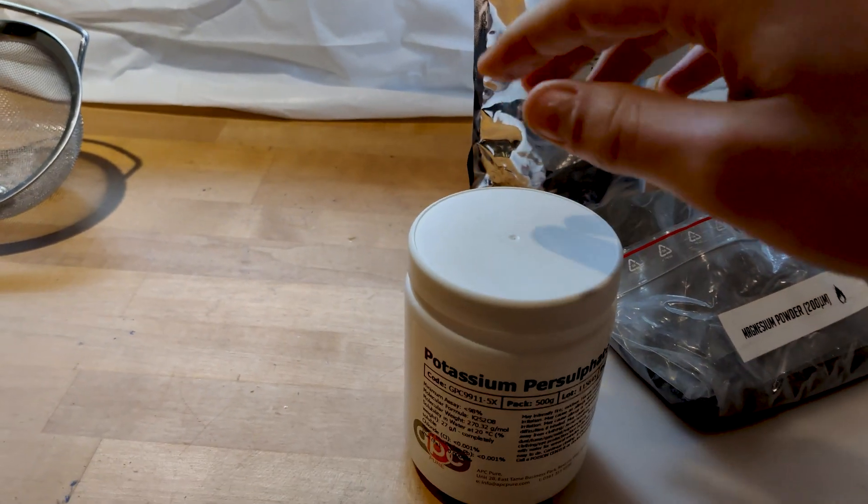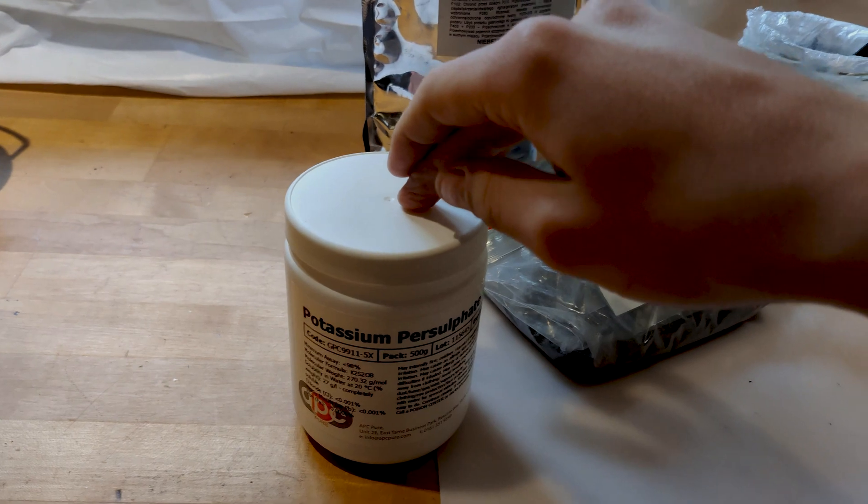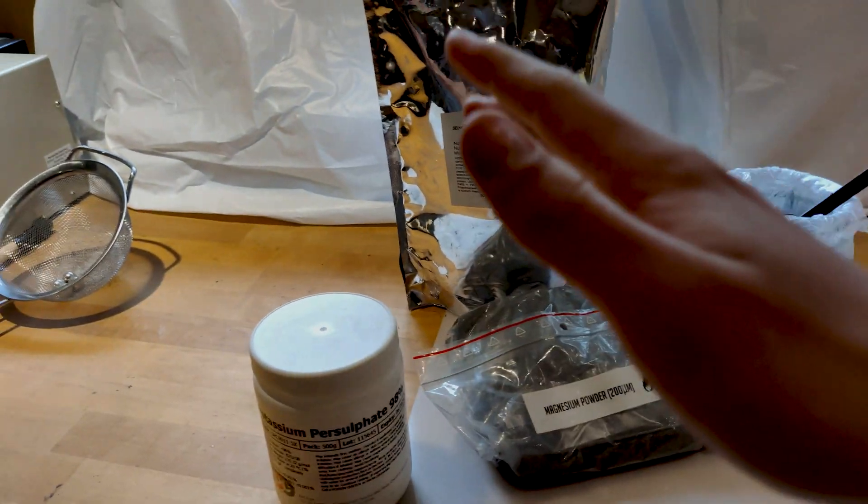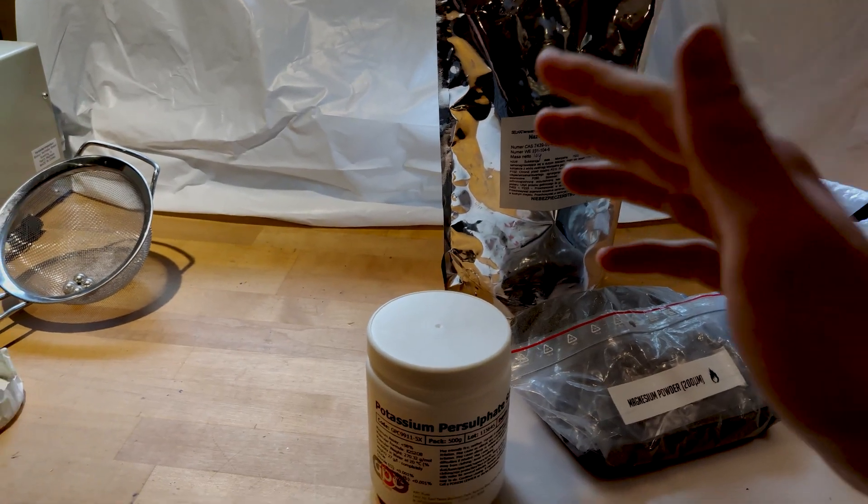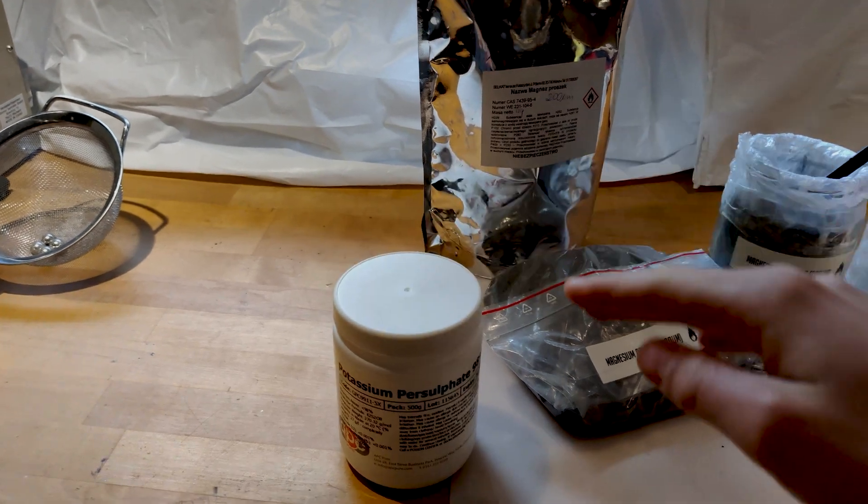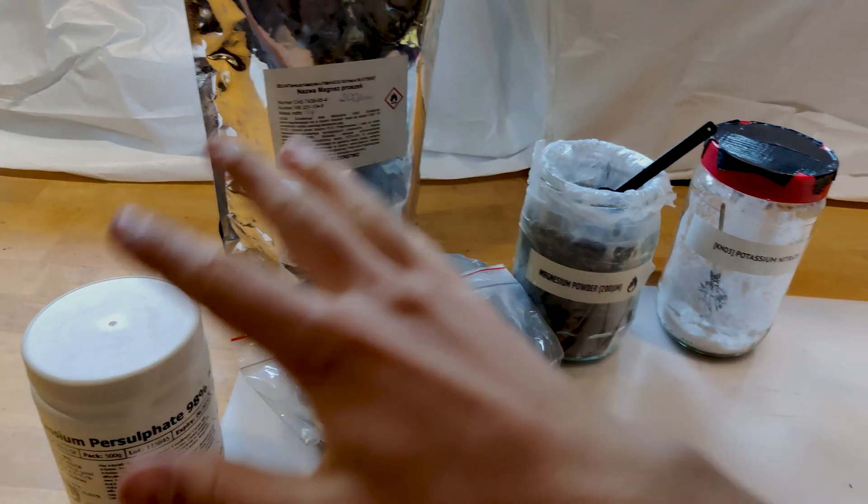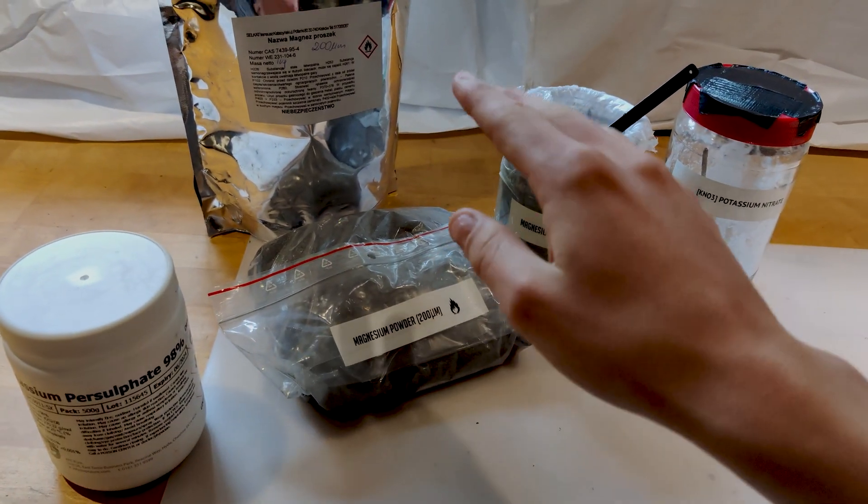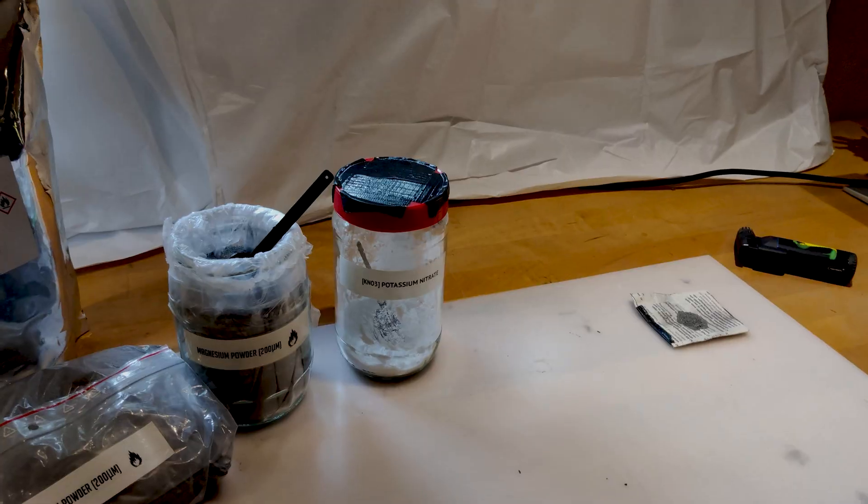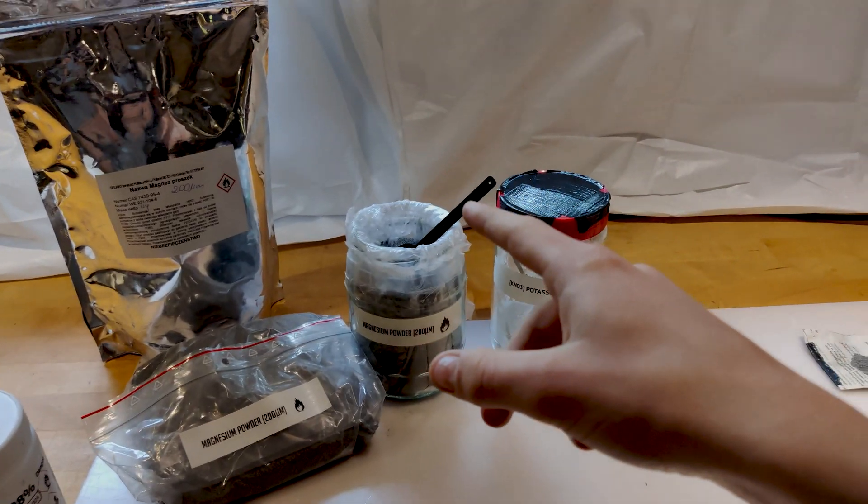Potassium persulfate can be replaced by sodium persulfate if you have that laying around. In fact, sodium persulfate is slightly better than potassium persulfate because it is less hygroscopic and more powerful. I'm using magnesium powder and these two oxidizers will be combined with magnesium powder. Let's jump right into the video.